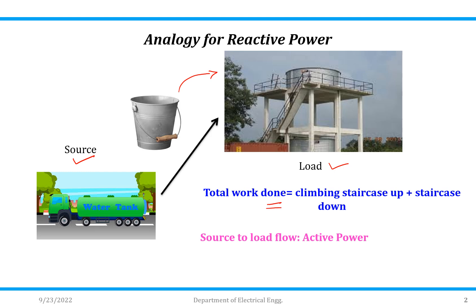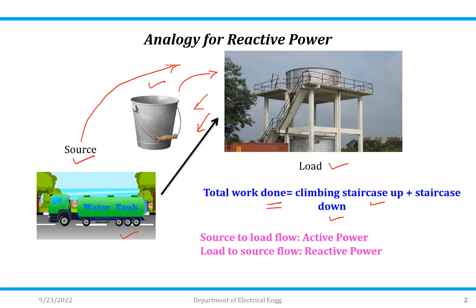What is the total work which is to be done? Climbing the staircase up with a bucket of water, pouring the bucket into the tank, and then coming back down from the staircase. So total work done is climbing the staircase up plus staircase down. Now while coming down from the tank towards the source, is there any increase in the level of the water? No, there is no increase in the water level, but it is still required — to fill the bucket from the source, that is from the tanker. So the direction of flow of water through the bucket from source to load is nothing but active power, and coming down from the tank towards the source is nothing but reactive power.